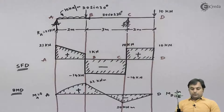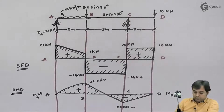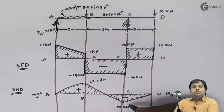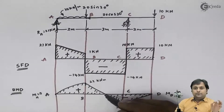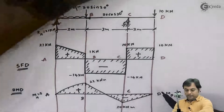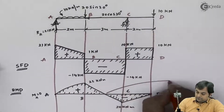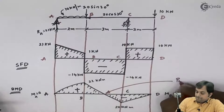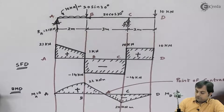I have noted the bending moment values at all points: A, B, C, and D. One important observation is that the bending moment changes sign from positive to negative. The point where the bending moment changes sign and becomes zero is called the point of contraflexure.